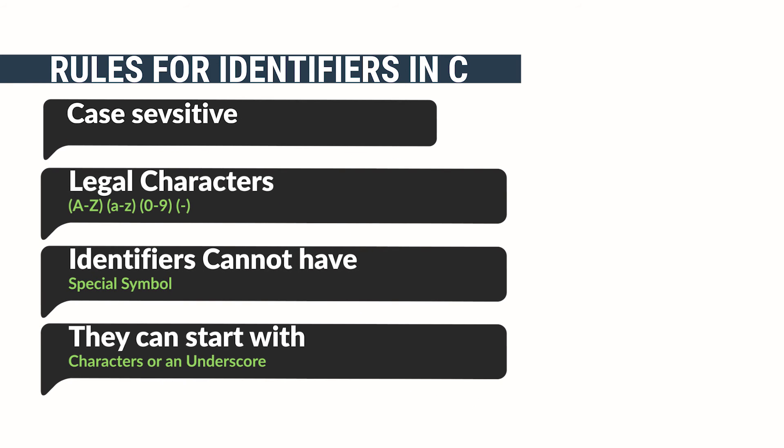Character set: Identifiers must consist of letters, both uppercase and lowercase, digits, and underscore. The first character of an identifier must be a letter or an underscore.